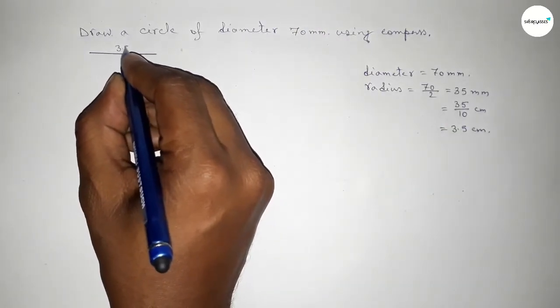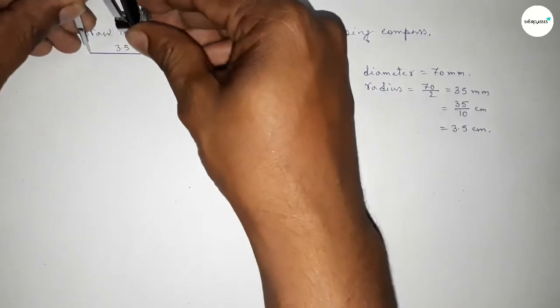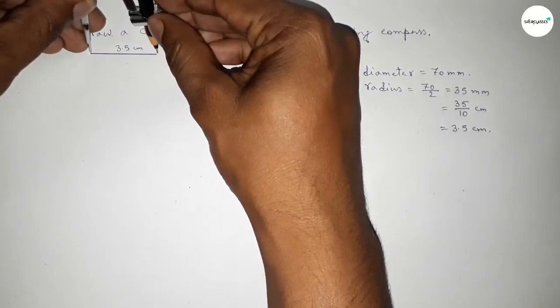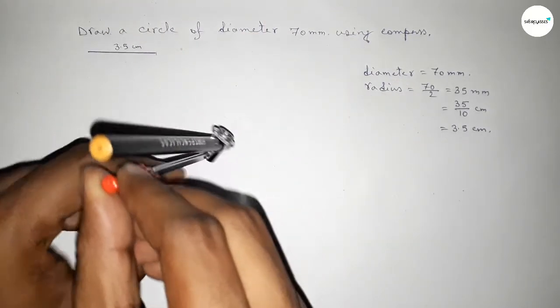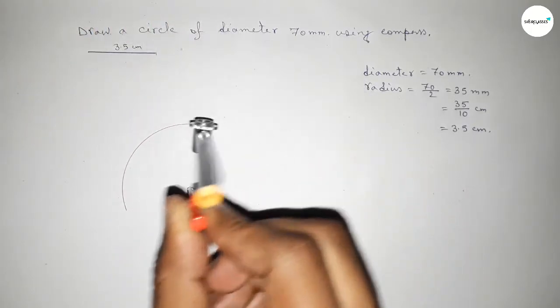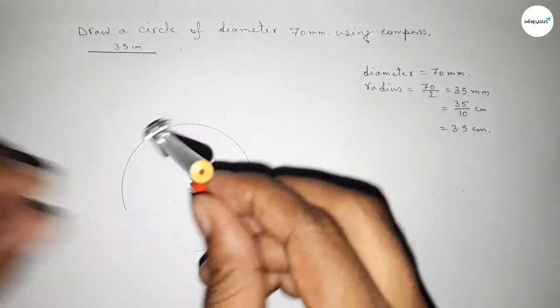Next, taking here an arbitrary point or any point. Next, taking the length 3.5 centimeter by using compass by this way and putting the compass here. Now drawing here an arc by this way and this represents a circle.